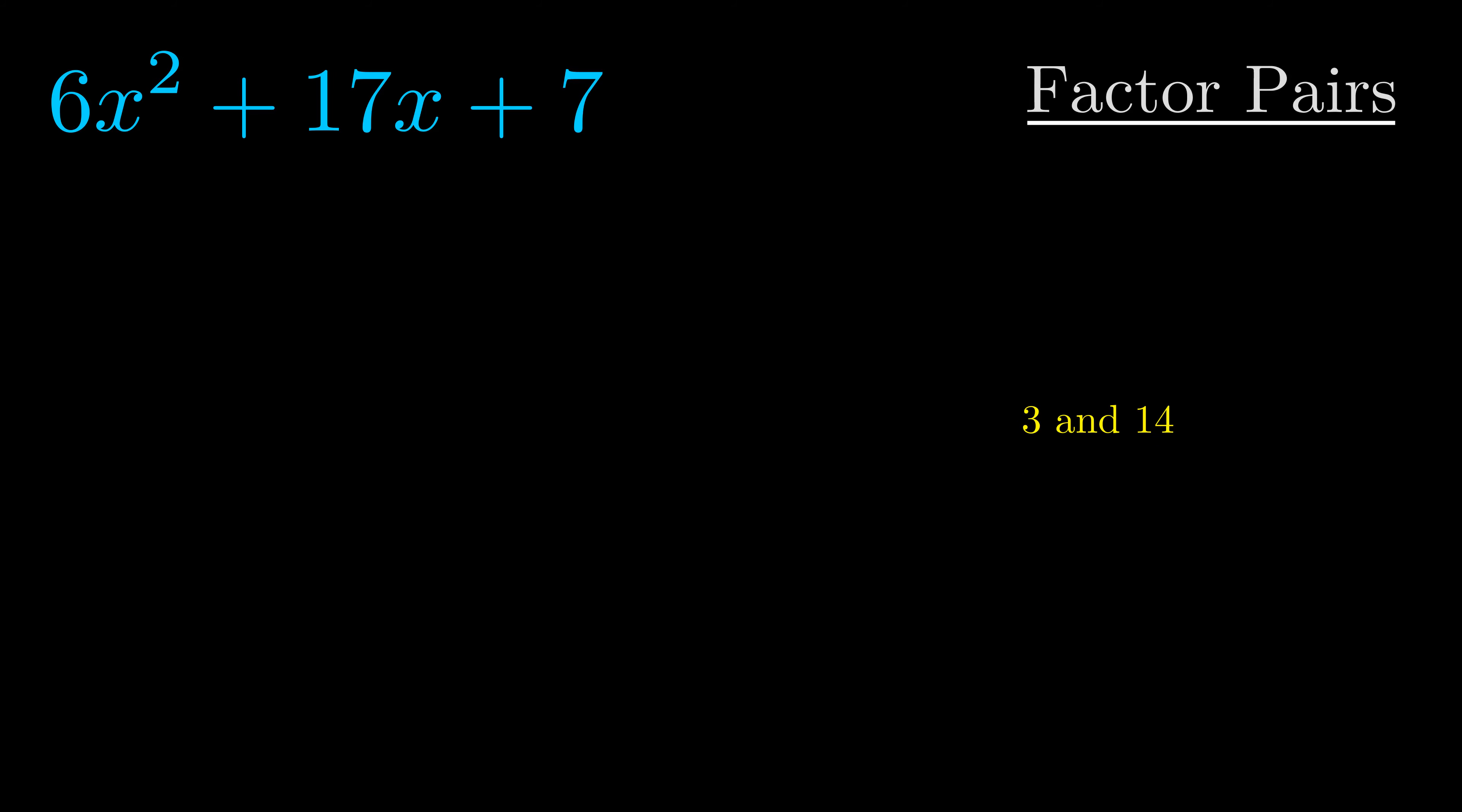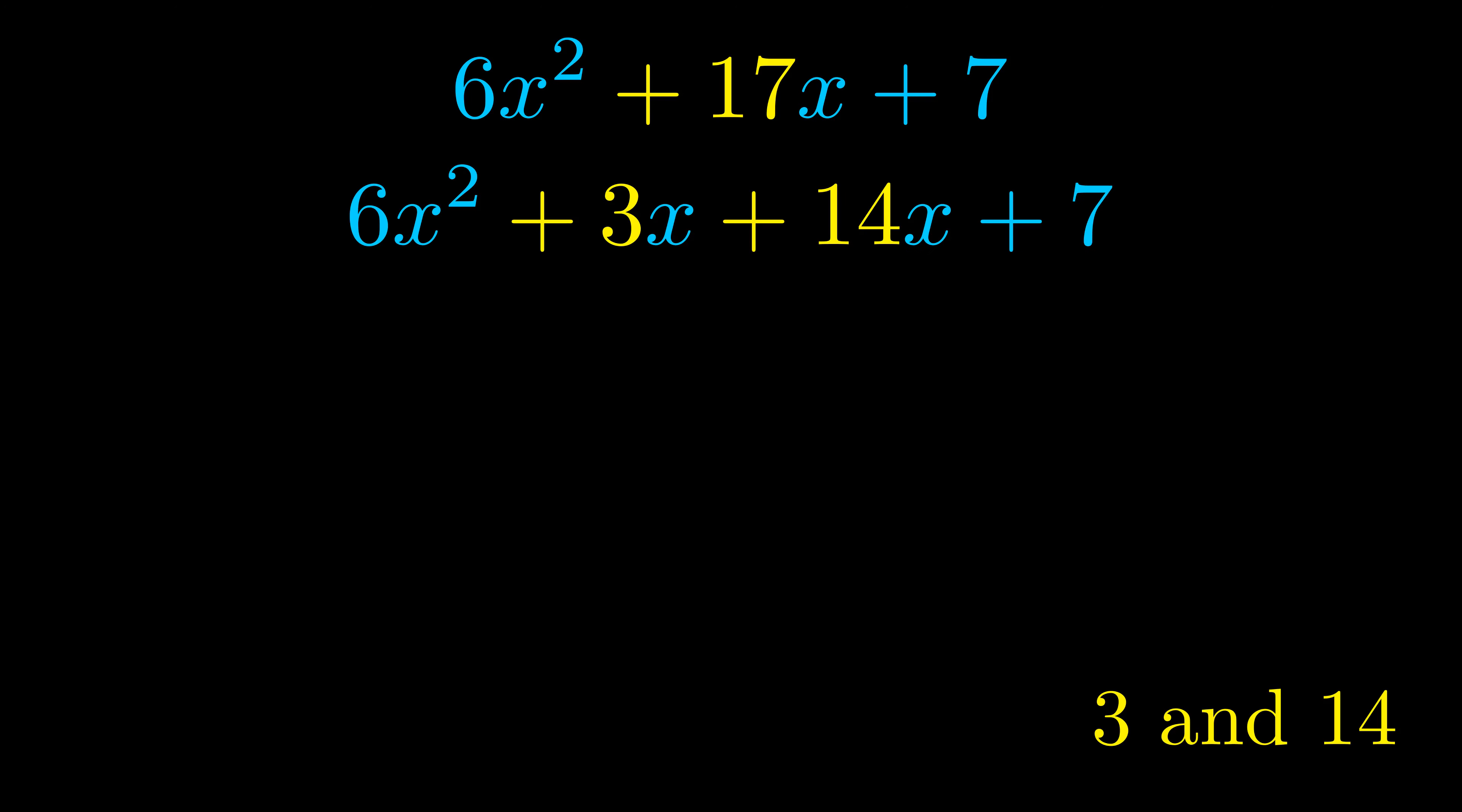Now once we have this factor pair what we want to do is use it to split up the b value. Notice how I'm going to keep my first term and my last term completely unchanged. It is only this b term highlighted in yellow that gets expanded into this correct factor pair.